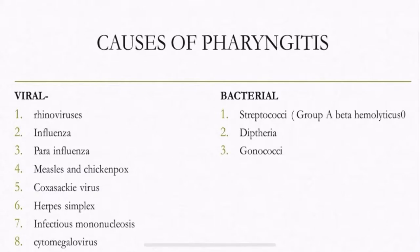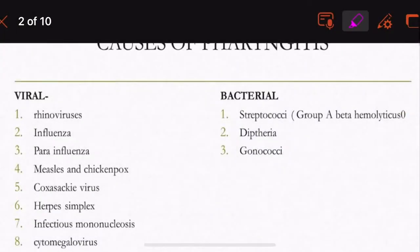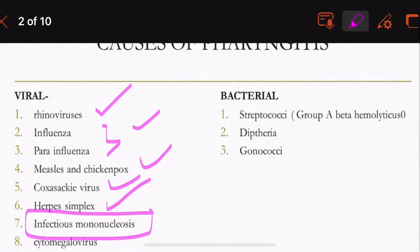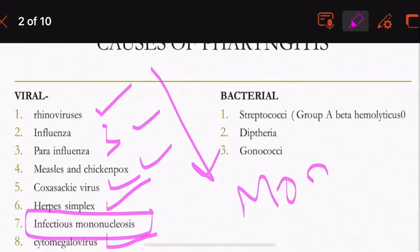The causes of pharyngitis: pharyngitis is caused by viral, bacterial, fungal, and other factors. Out of them, the viral is the most common. Viral factors include rhinovirus, influenza, para-influenza, measles, chicken pox, coxsackievirus, herpes simplex virus, infectious mononucleosis, and cytomegalovirus. The viral cause is the most common.